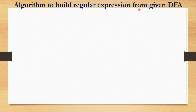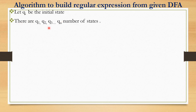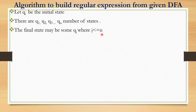Algorithm to build a regular expression from a given DFA. First, let qi be the initial state, with states q1, q2, q3, through qn. The final state may be some qj where j is less than or equal to n. Let aij represent the transition from qi to qj.